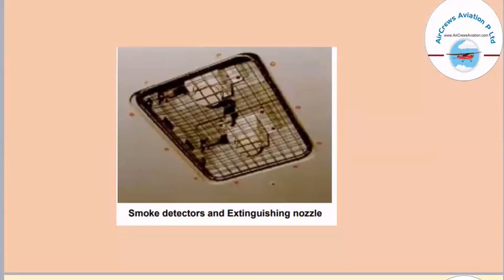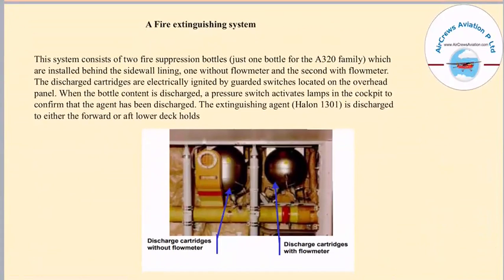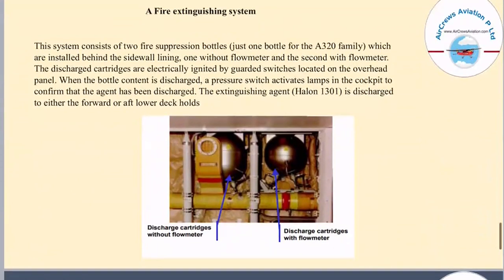The second subsystem is the fire extinguishing system. It consists of two fire suppression bottles installed behind the sidewall lining — one without a flow meter and one with a flow meter. The discharge cartridges are electrically ignited by guarded switches on the overhead panel. When the bottle content is discharged, a pressure switch activates lamps in the cockpit to confirm that the agent has been discharged. The extinguishing agent HL1301 is discharged to either the forward or after lower deck hold.